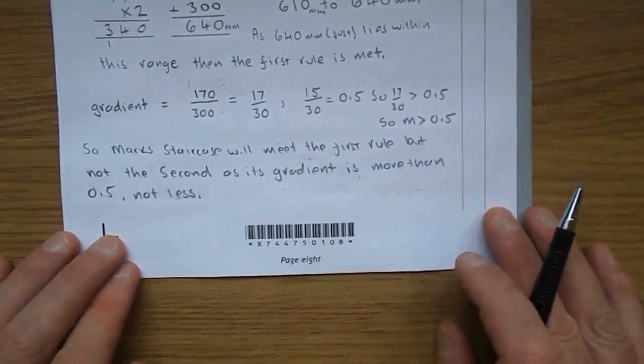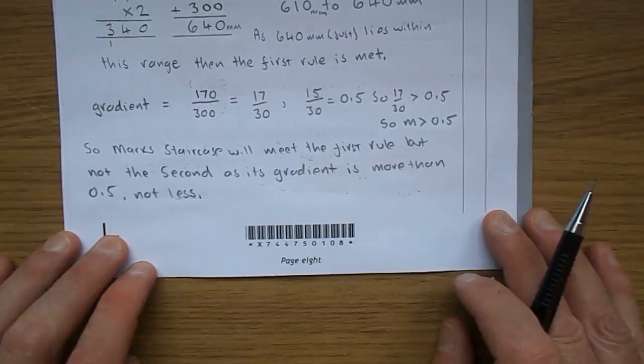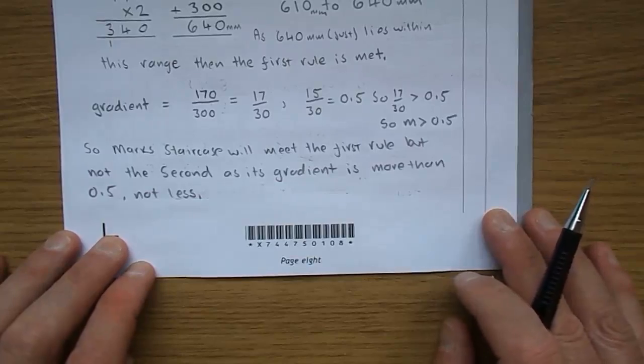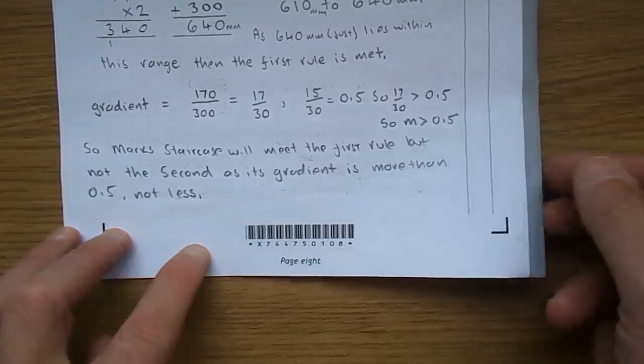So Mark's staircase will meet the first rule, but not the second, as its gradient is more than a half, not less.